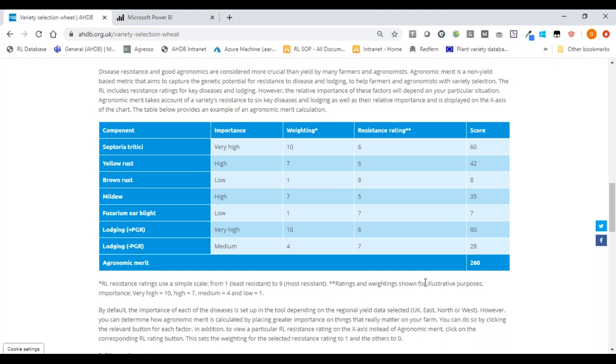If I, for example, for the north, brown rust typically doesn't have a high importance. But if, on the other hand, I'm farming in the east, brown rust is more important. What's happened behind the scenes is that the importance has changed. I'm going to go back to the website and go to this table now. This is an example of how agronomic merit is calculated. As you can see, this takes the rating of a particular variety. And as the importance to brown rust, in this case, is set to low, which means that the weighting, which is the number associated with each of these categories, is one.